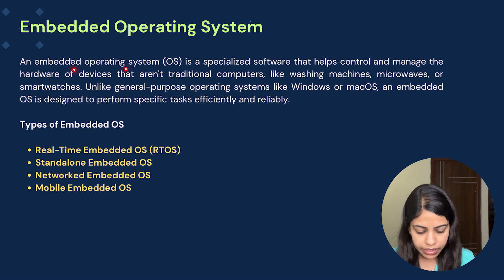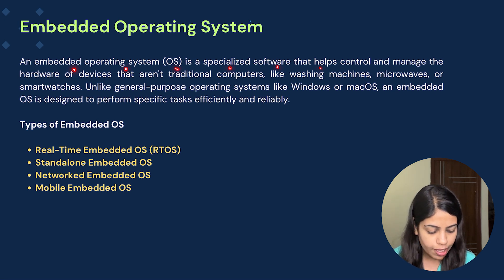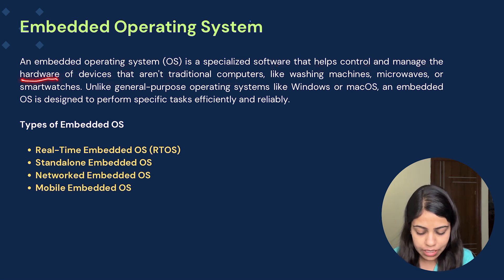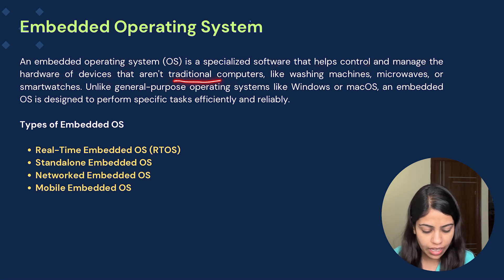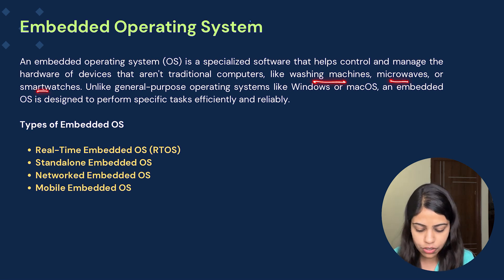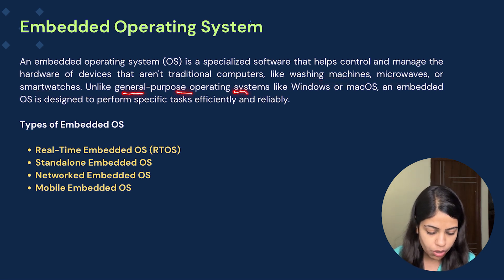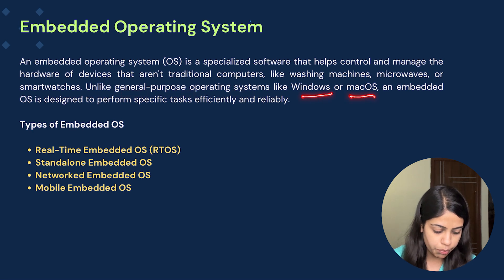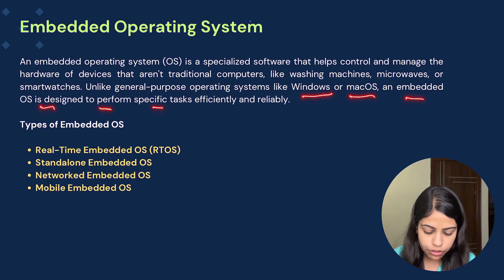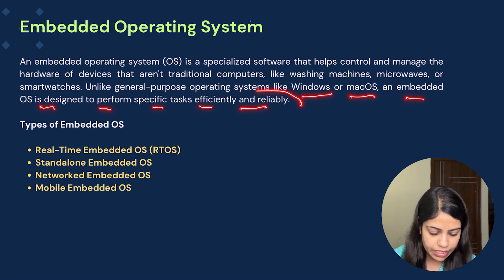An embedded operating system is specialized software that helps control and manage the hardware of devices that aren't traditional computers — like washing machines, microwaves, or smart watches. Unlike general-purpose operating systems like Windows or macOS, an embedded operating system is designed to perform specific tasks efficiently and reliably.